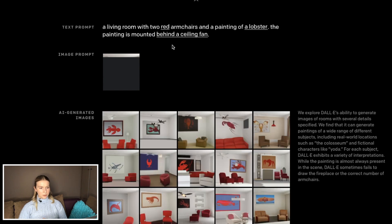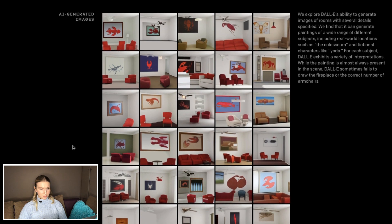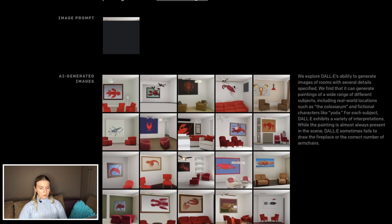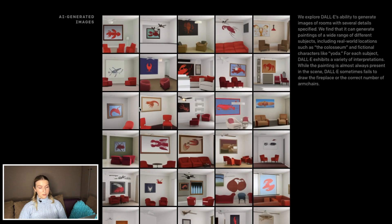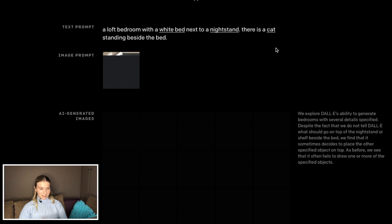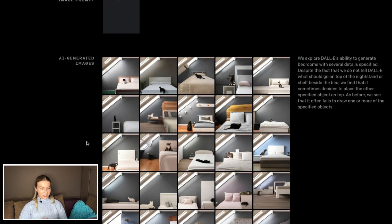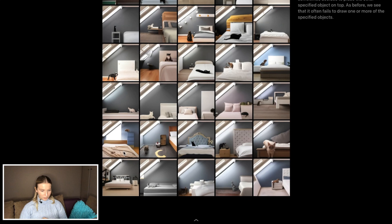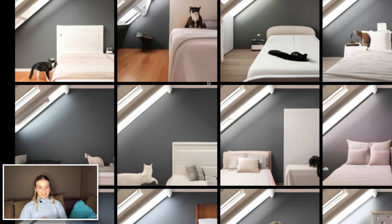A living room with two red armchairs and a painting of a lobster; the painting is mounted behind a ceiling fan. This is really good — yes, it doesn't get the quantity right sometimes and doesn't get the chair right, but many times it's very impressive. A locked bedroom with a white bed next to a nightstand; there is a fish tank standing beside the bed and a cat standing beside the bed. The cat is not necessarily beside the bed but all over the bed. Cats don't want to leave your bed — and what is this creature? I don't think it's a cat. That's hilarious.